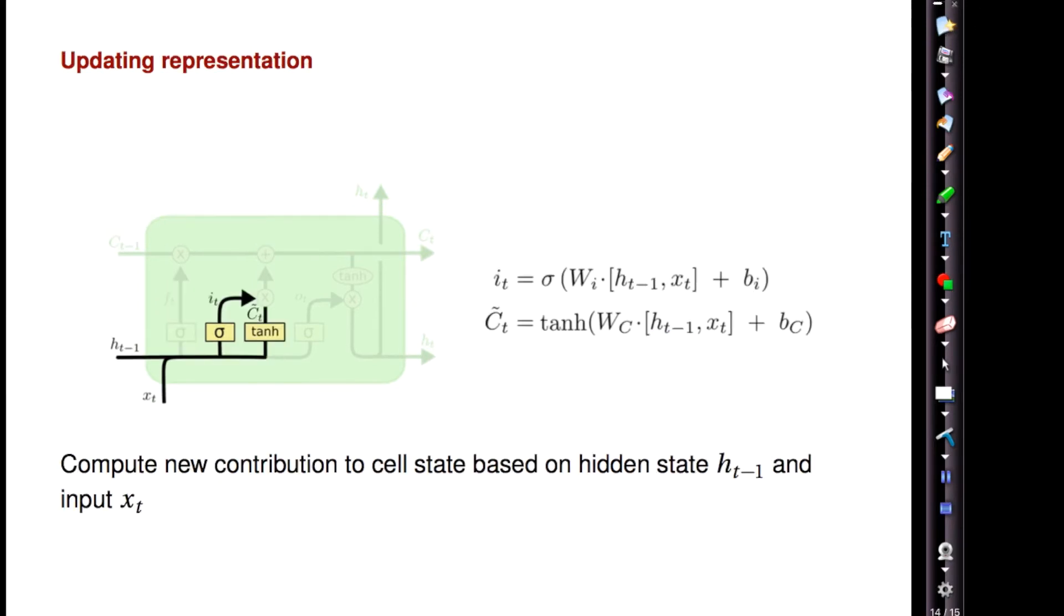The other decision you need to make is how much you're going to contribute to your representation from the current time step. This is again a function of both the hidden state and your current input plus some bias, and then as usual that gets passed through a non-linearity. There are two components to this.